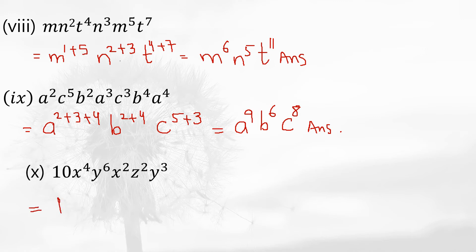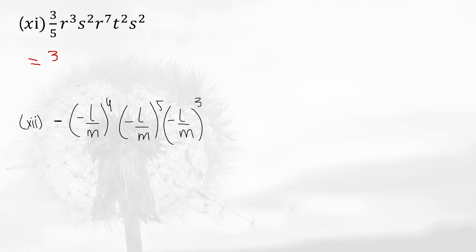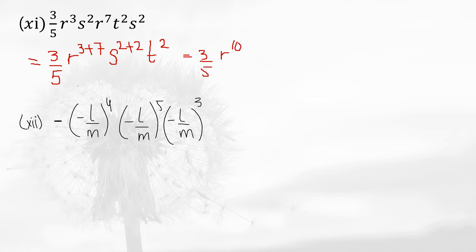Question 11 is also straightforward. Write 3/5 as it is. For r, the powers are 3 plus 7 equals 10. For s, the powers are 2 plus 2 equals 4. For t, there is only one term so write t to the power 2. The answer is (3/5) times r to the power 10, s to the power 4, and t to the power 2.